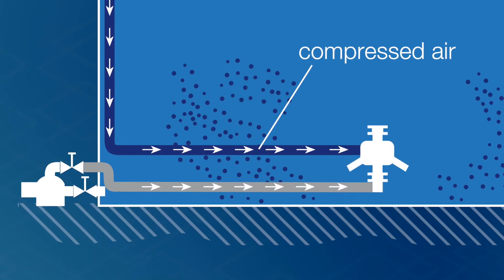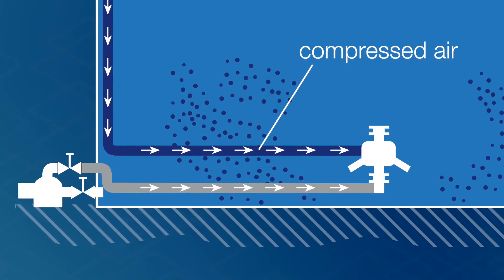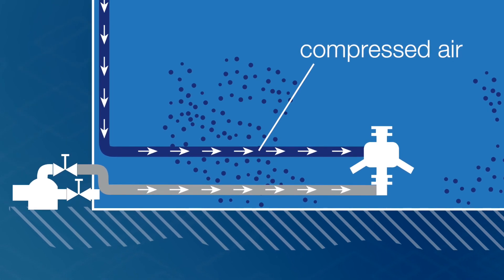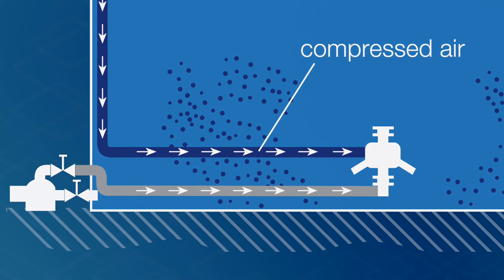Compressed air is usually added to the ejector in order to increase efficiency.